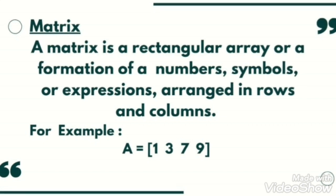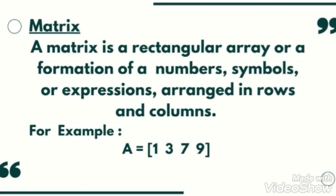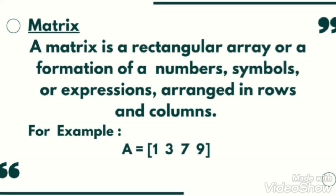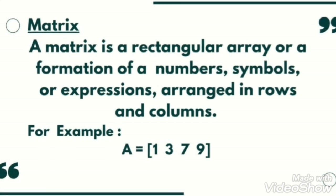Order is specified by the number of rows and number of columns in a matrix. In this example, how many rows? One row. How many columns? 1, 3, 7, 9 - there are four columns. So order of matrix A is 1 by 4.